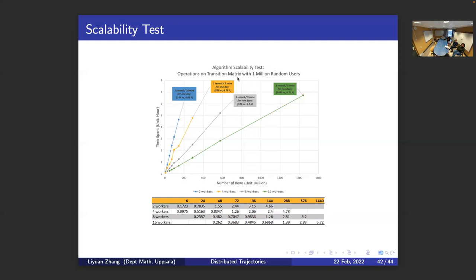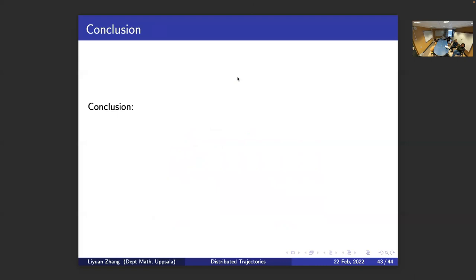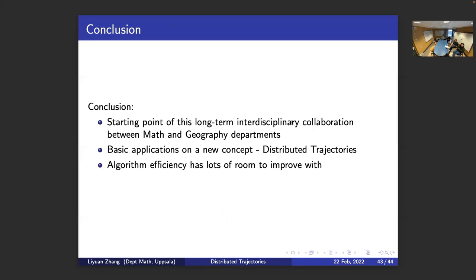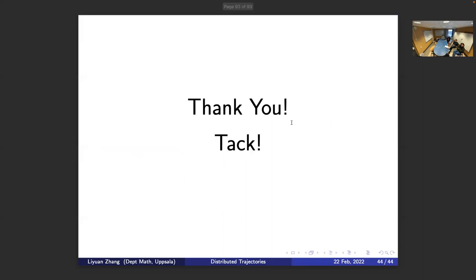This is the conclusion. This is just the starting point of a long-term interdisciplinary collaboration between the math and geography departments. In my project, I made some basic applications, most importantly introducing our new concept of distributed trajectories. Personally, I think one drawback is that the efficiency of the algorithm still has a lot of room to improve — which is perhaps the next thing to work on. That's all I wanted to say. Thank you very much.